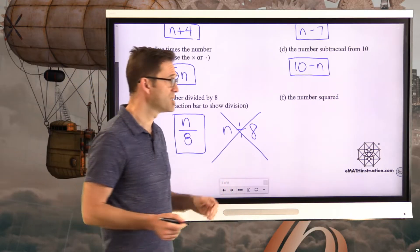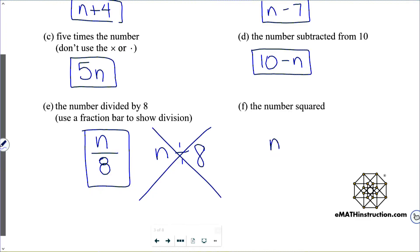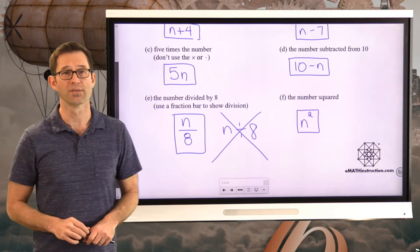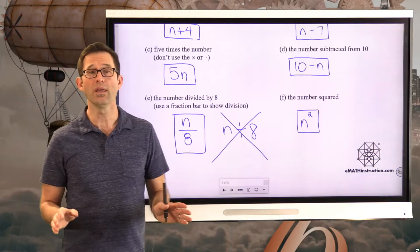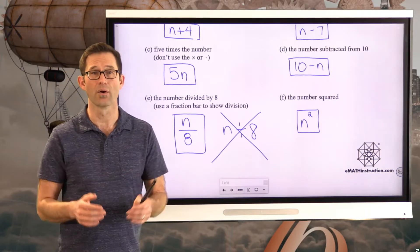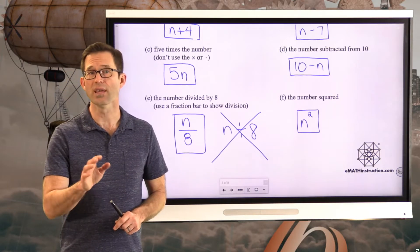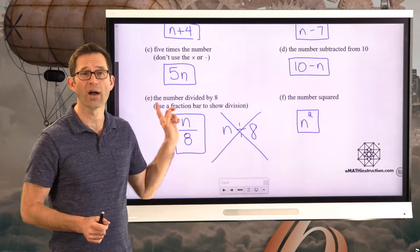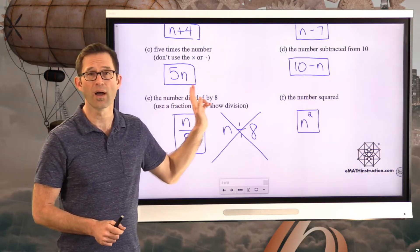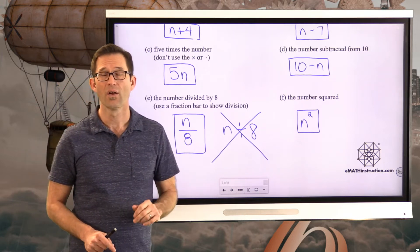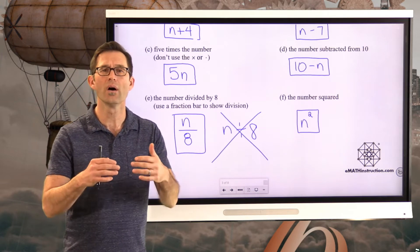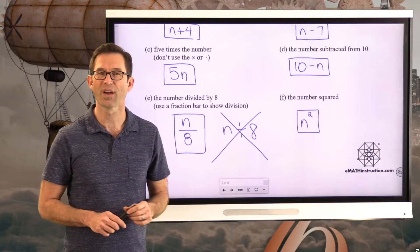Finally, the number squared. Whenever we square a number, it means raising it to the second power, so we get N squared (N²). The key idea here is that we can take a letter, use it as a placeholder for a number we don't know — like 5 times 7 becomes 5N, or 56 divided by 8 becomes N divided by 8.